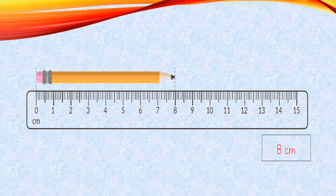You find many divisions on the margin of the ruler. Some lines are longer while others are smaller. The longer lines represent the numbers in line, and the small lines between two longer lines represent divisions of a centimeter. By this way, you can measure a small object.